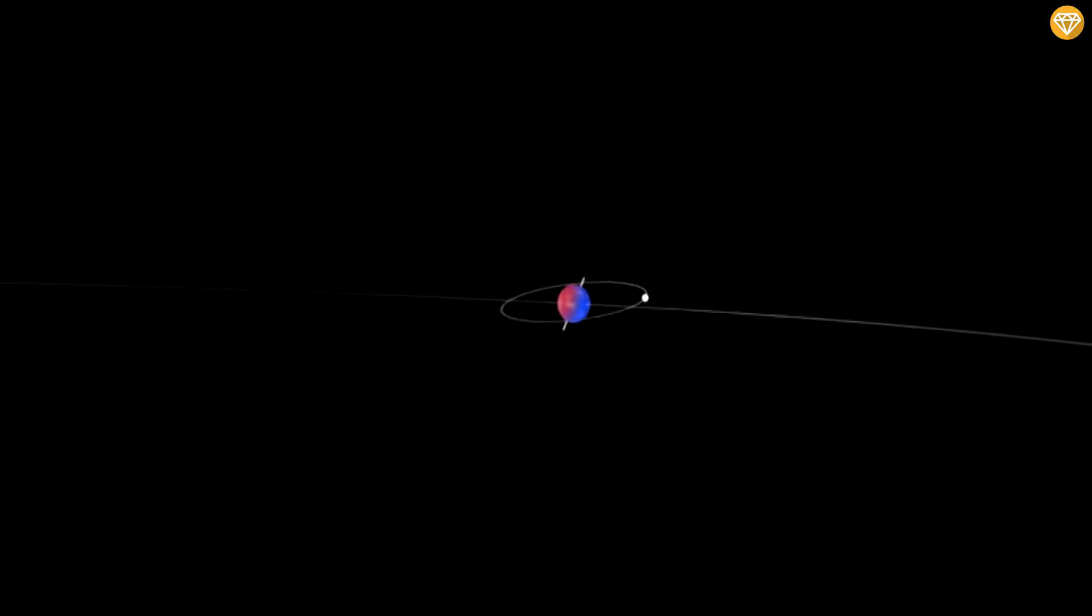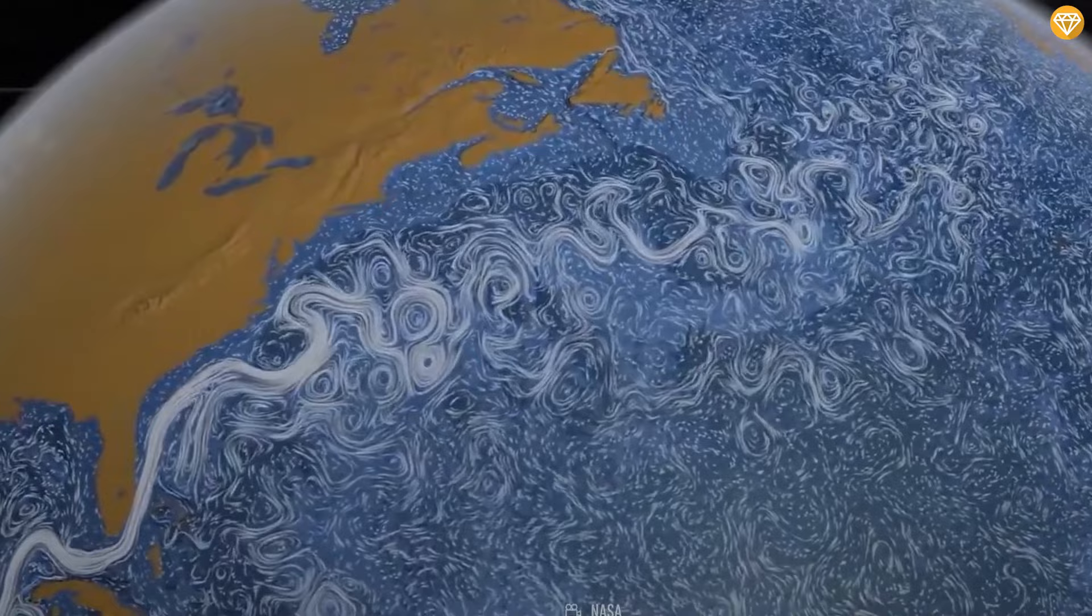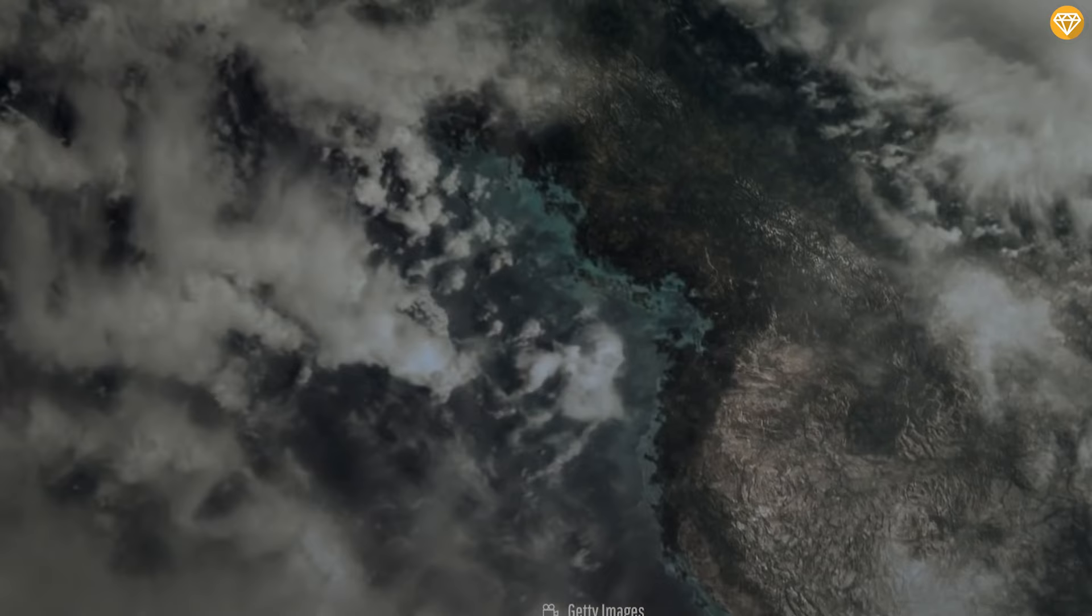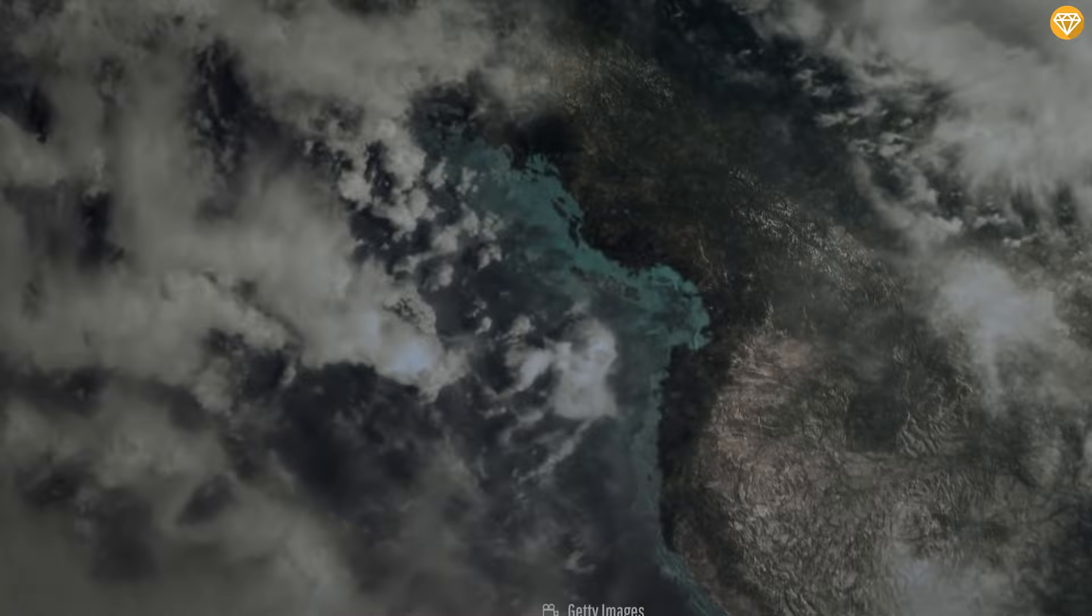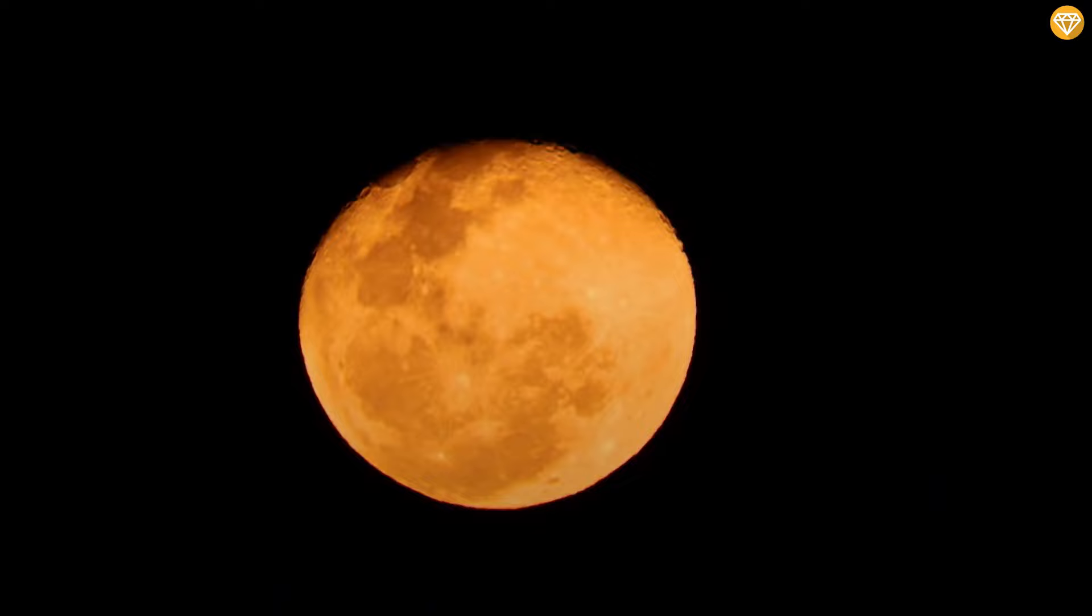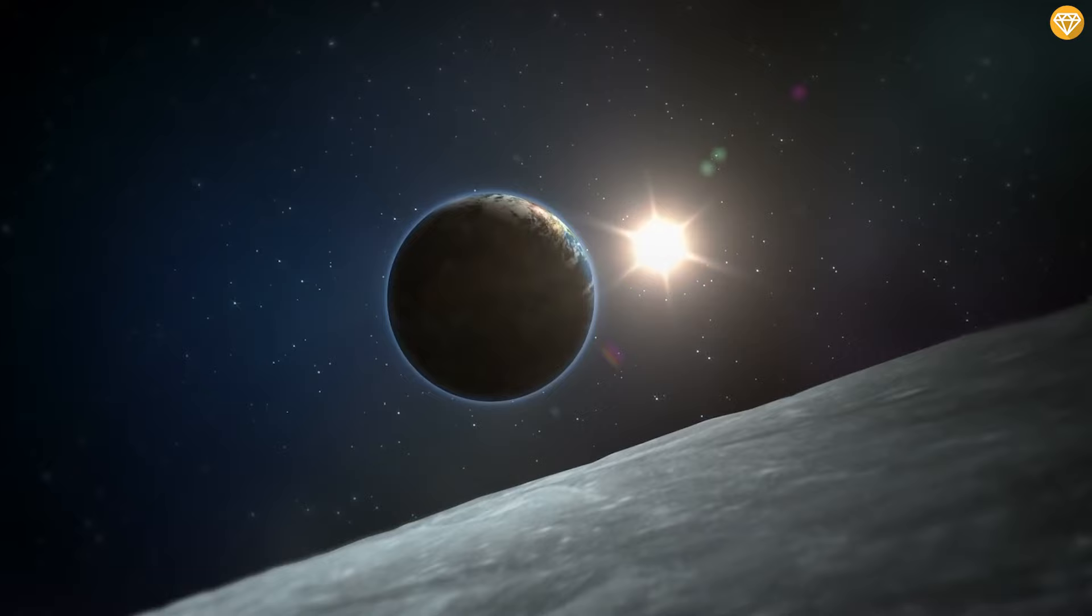Such a drastic tilt would expose the poles directly to the sun, causing the ice caps to melt and triggering extreme climate changes. Even a one-degree shift in the Earth's axial inclination can have significant impacts, leading to ice ages. The moon's presence plays a crucial role in maintaining the Earth's stable tilt, which is vital for the planet's climate and the existence of distinct seasons.